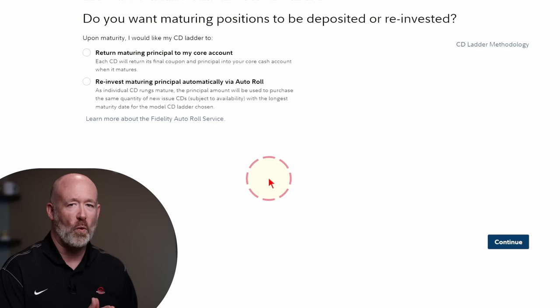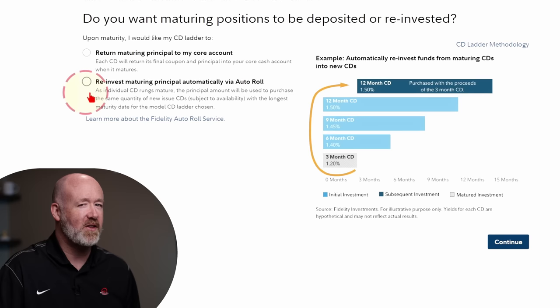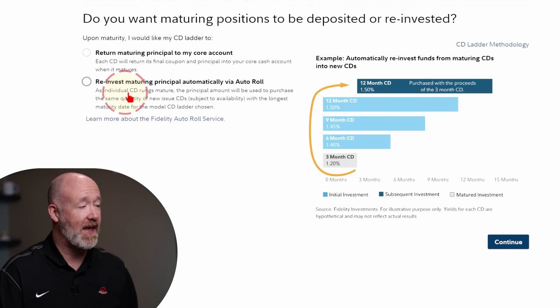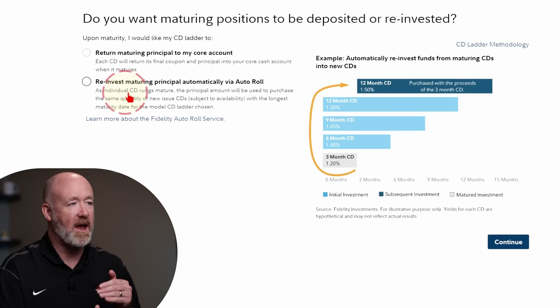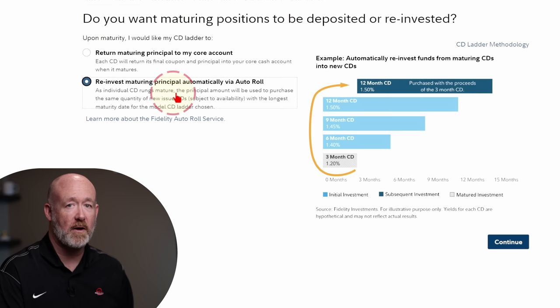The first option is to return the maturing principal to your core account — as soon as the CDs mature, it puts the funds straight into your Fidelity account where you have access to all of that cash. If you choose the next option, as your CDs mature it will auto-enroll them into the next set of CDs, so when the three-month matures it then buys a 12-month CD. That way, every three-month cadence, you're still going to have access to all of that principal. For today's example, I'm going to choose to have everything returned to my account, since I'll make the reinvestment decision when the time comes.